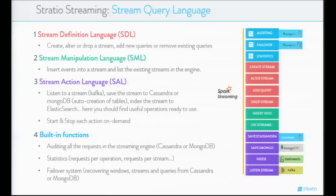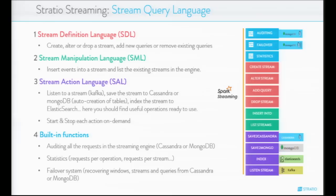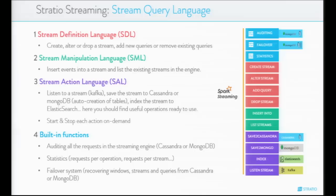There are also built-in functions: the ability to audit all requests made to the streaming engine, stored in Cassandra or MongoDB — persisting all operations users have made. We have statistics showing requests made by operation or by stream. And importantly, there is a failover system for recovering streams, queries, and windows from Cassandra or MongoDB. So if the engine fails, when it recovers it restores all the streams, queries, and the current status of the windows that existed in the engine at that moment.